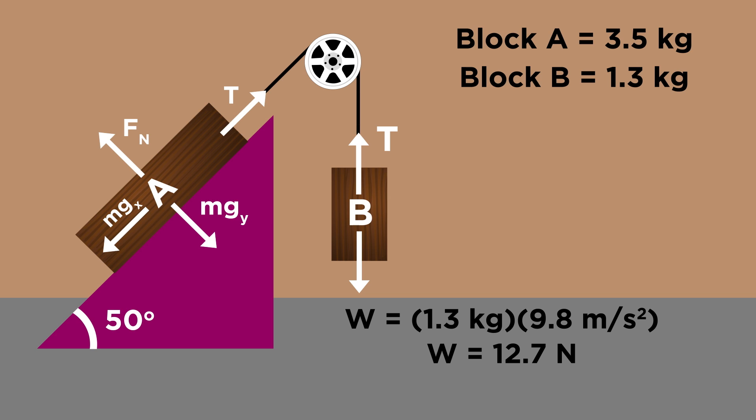For the hanging block, the gravitational force will be 12.7 newtons. For the block on the ramp, the gravitational force will be 34.3 newtons, but to get the relevant components, we have to do some trig.